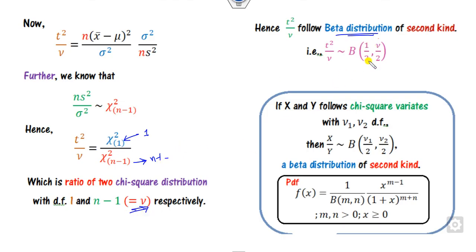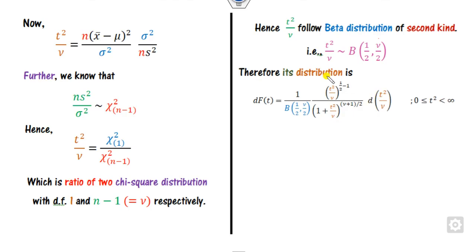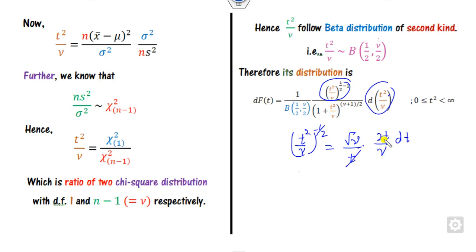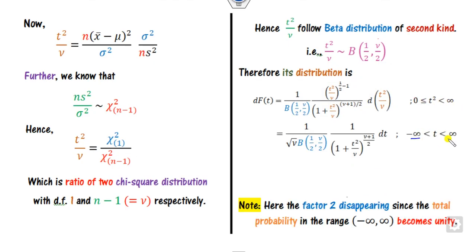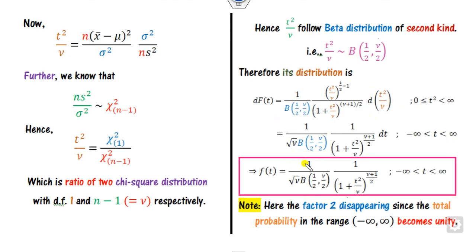Denoting n-1 as nu, we substitute this value into the CDF expression. Expanding using the substitution x equals T squared over nu, the factor of minus one-half gives root nu over T, and the derivative contributes 2 over this. Since the integration runs from minus infinity to plus infinity, the factor of 2 disappears because the total probability over the range is 1. This gives the PDF of the T-distribution as 1 over root(pi times nu) times a gamma-function expression, over the domain minus infinity to plus infinity.